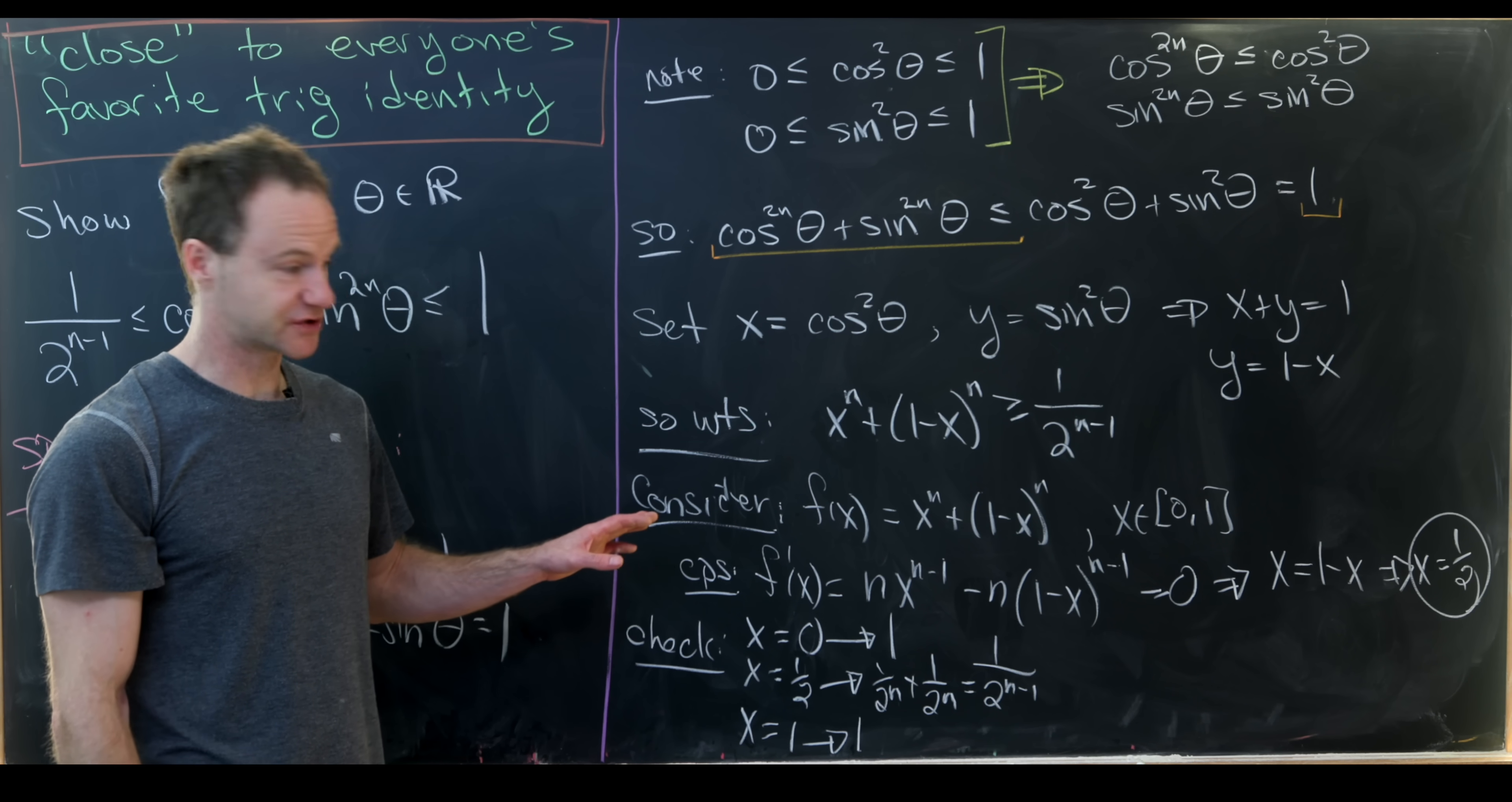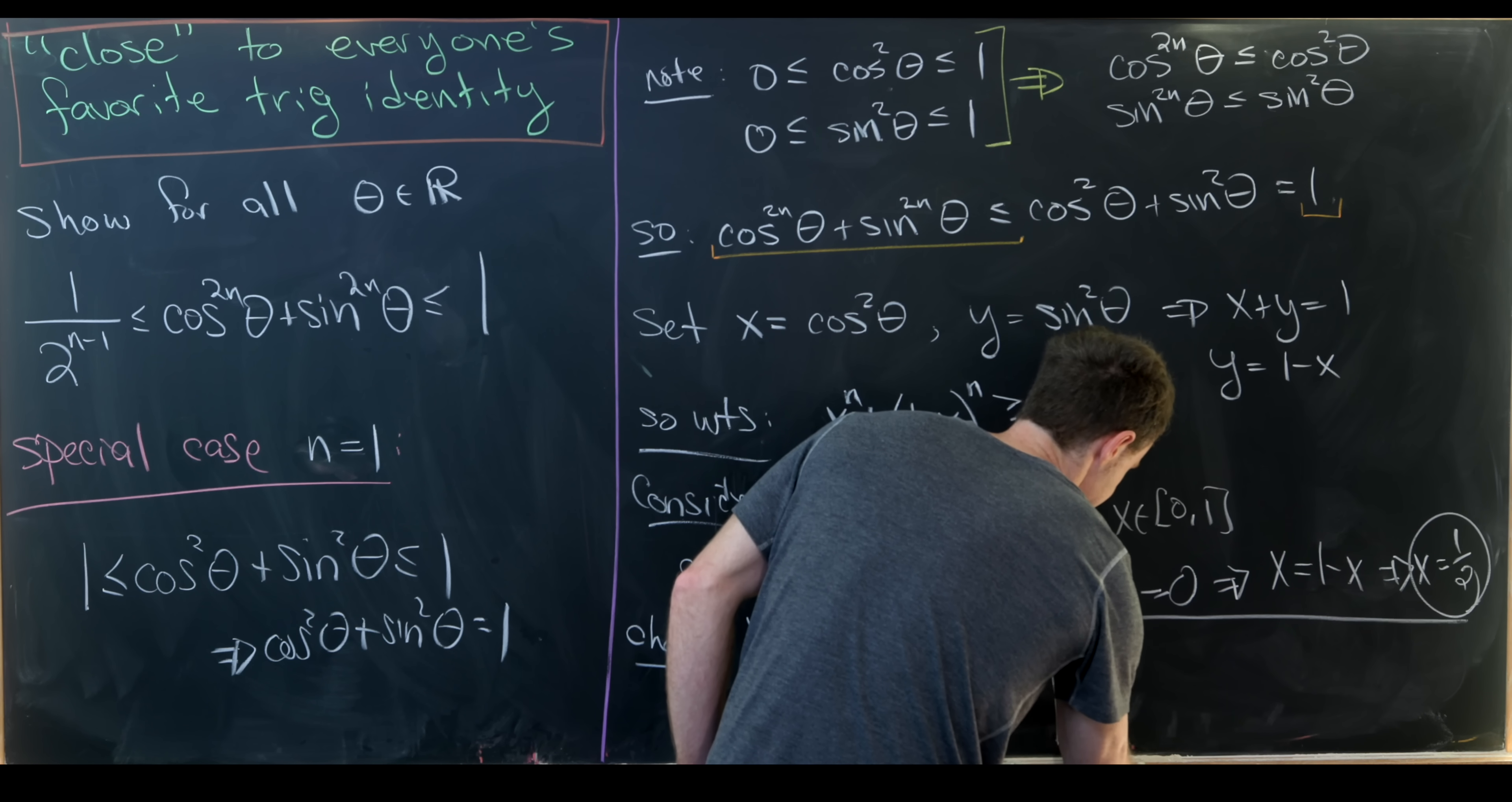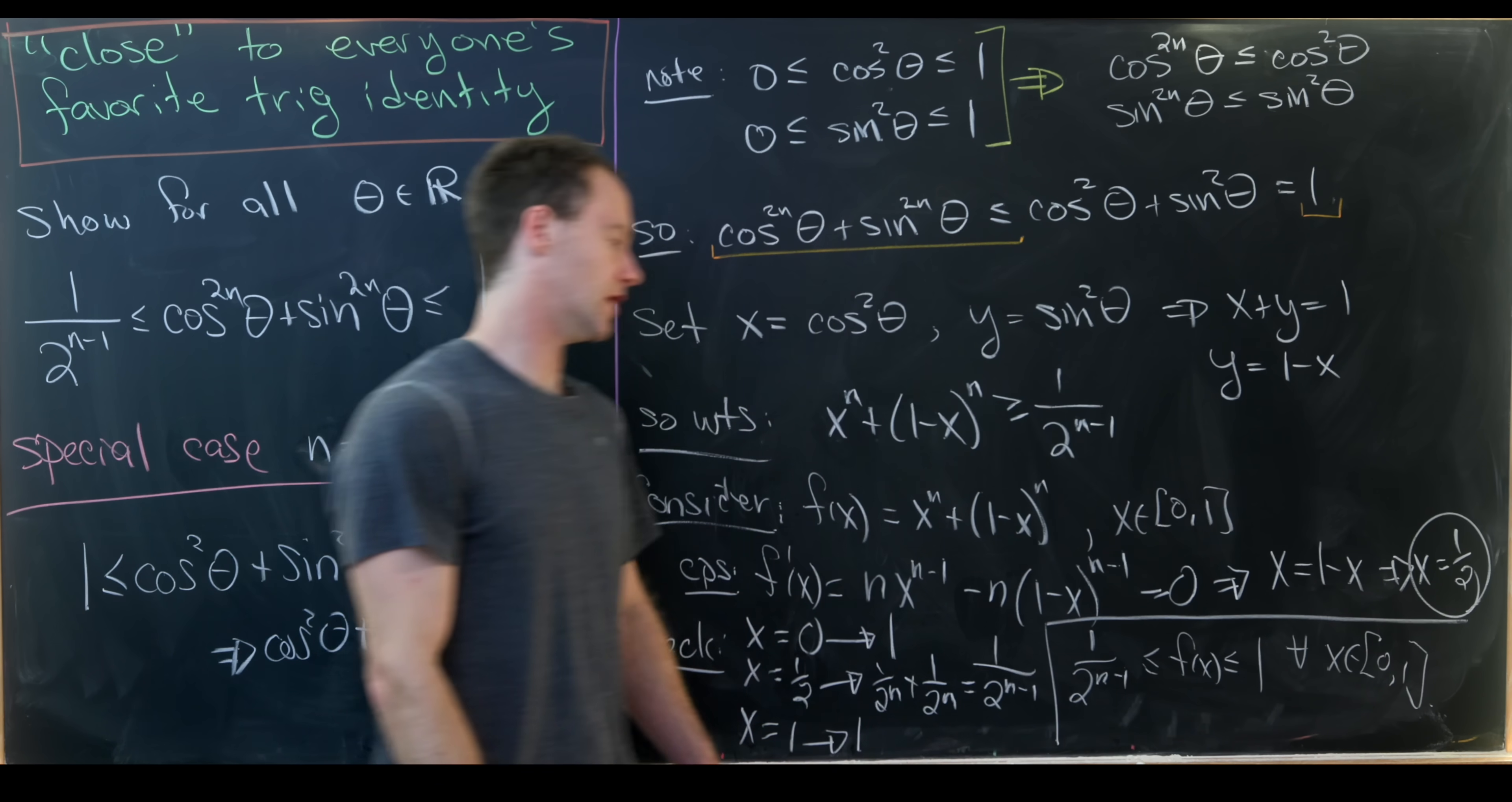So again, by the extreme value theorem, we know that we achieve a minimum value of this 1 over 2 to the n minus 1 and a maximum value of 1. So in other words, we know 1 over 2 to the n minus 1 is less than or equal to f of x, which is less than or equal to 1 for all x on the interval 0 to 1.